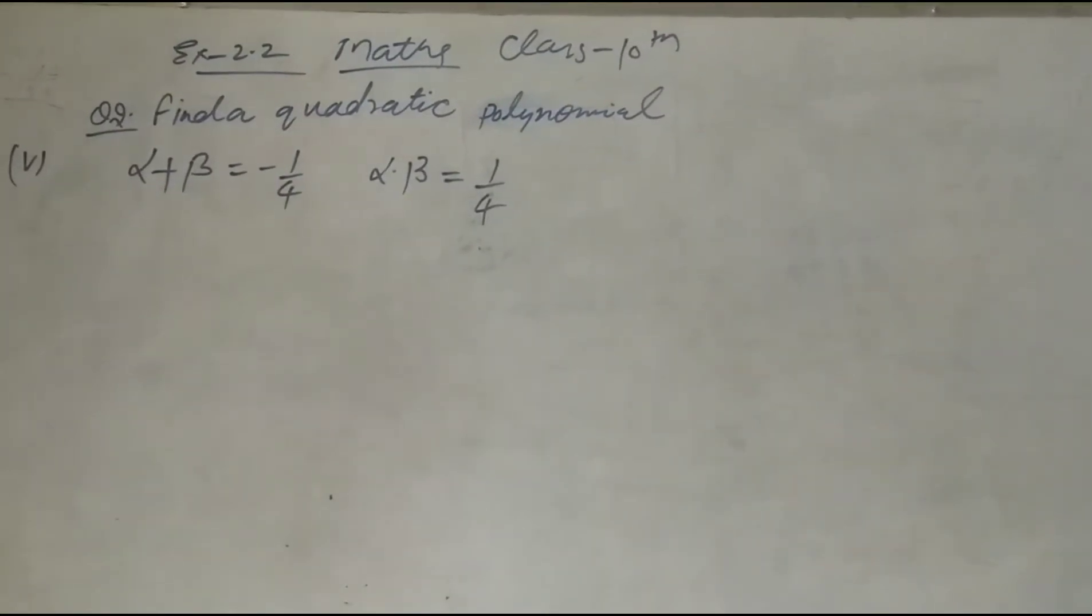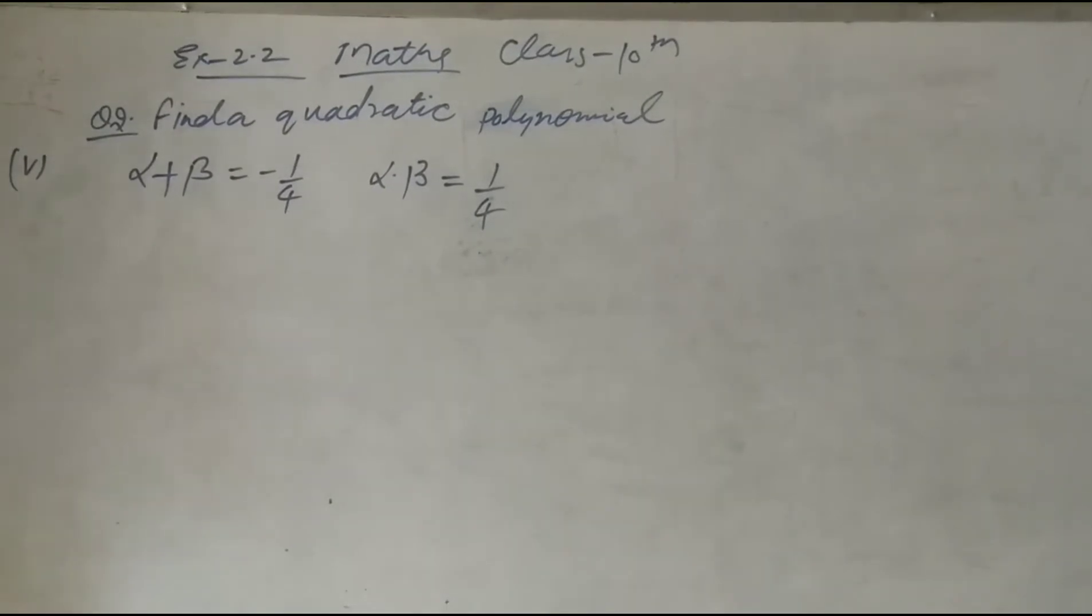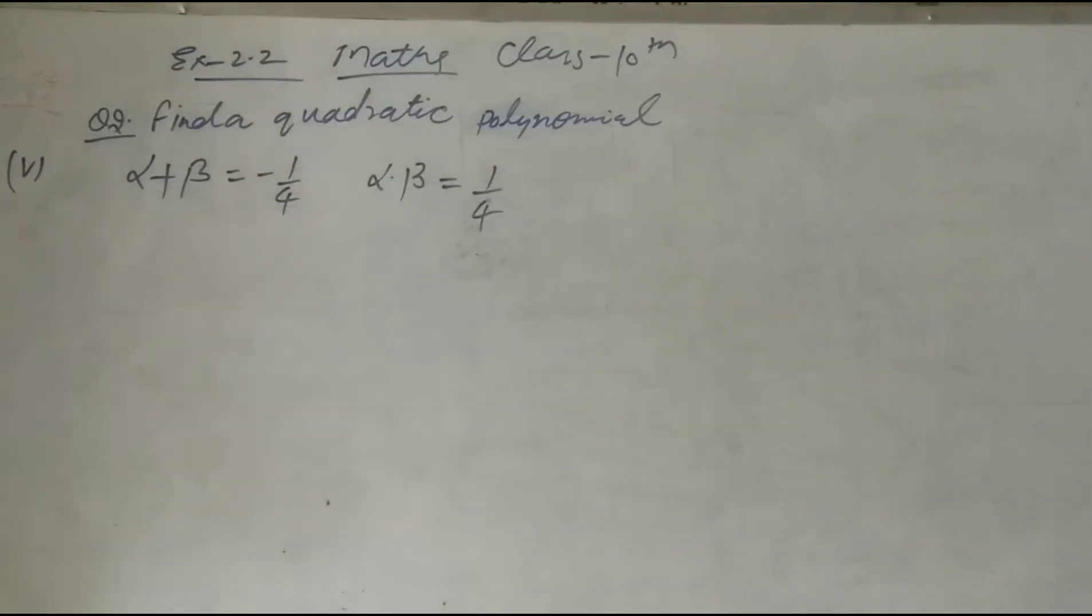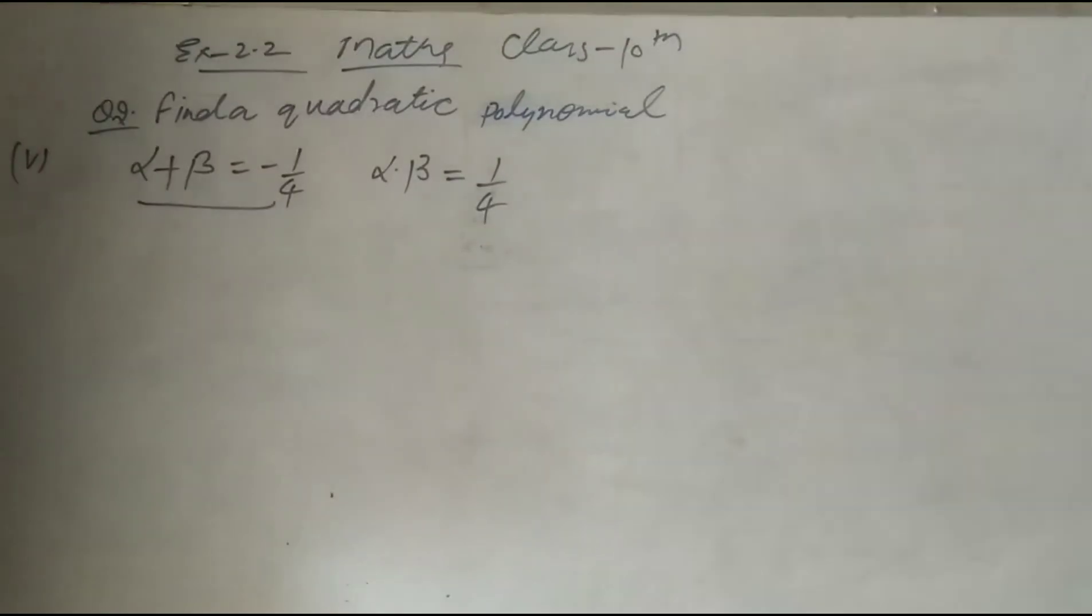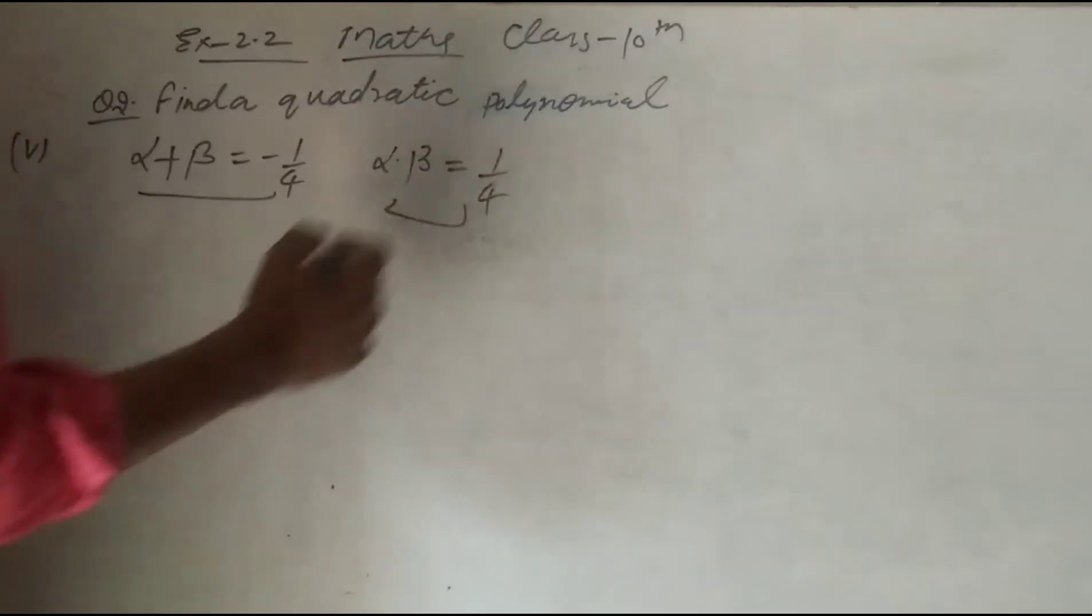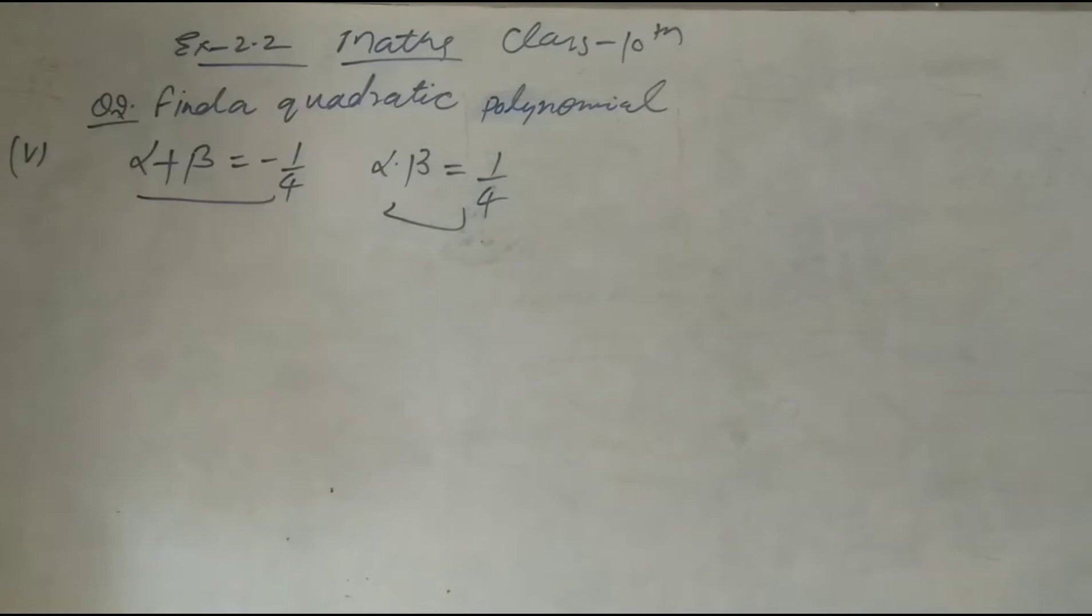Find a quadratic polynomial with the given numbers - the sum of the zeros and product of the zeros are given here. We have to find out the quadratic polynomial.